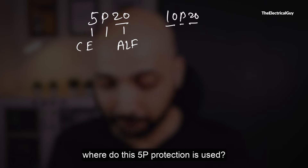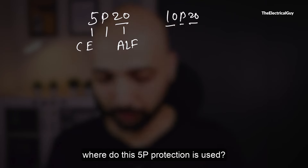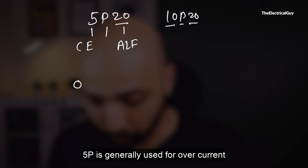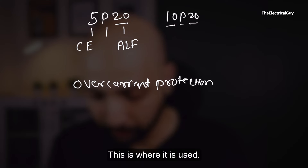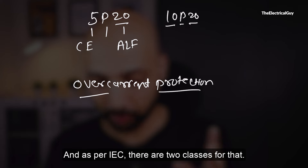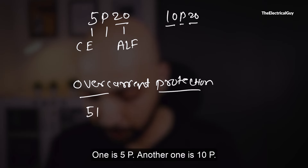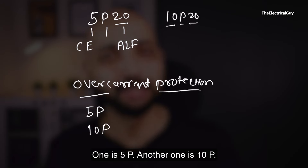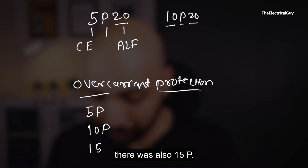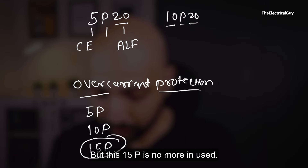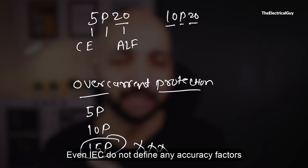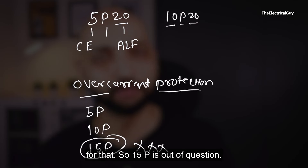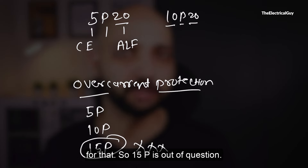The 5P protection class is generally used for overcurrent protection. As per IEC, there are two classes: 5P and 10P. Historically there was also a 15P class, but it is no longer in use and the IEC no longer defines accuracy factors for it, so 15P is out of the question.